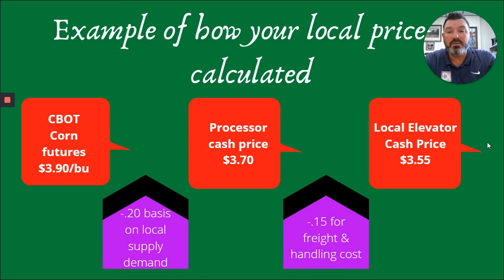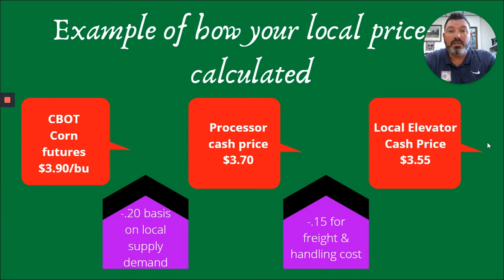Your local elevator has to account for supply and demand as well as the freight and handling costs incurred by trucks coming in, dumping grain at their location, loading it through their handling system, and back out on the truck or out to rail before it gets moved to the next destination. That's how they calculate the local cash price. You'll often see a relationship between the local price and the futures price, and they will oftentimes move in very similar directions.